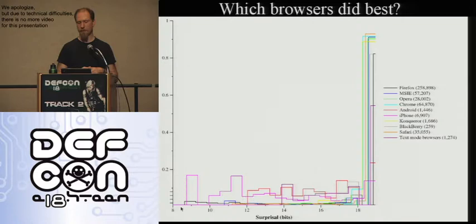Firefox is this black line. It follows a curve down here where it has a little bit of a tail in the non-unique area. That's because some people had JavaScript turned off in Firefox or they were running Tor button, which shows up as Firefox. And right up here, there's a very large number of unique Firefoxes. All of the desktop browsers, aside from Firefox, are like that but without this little tail of non-unique people.